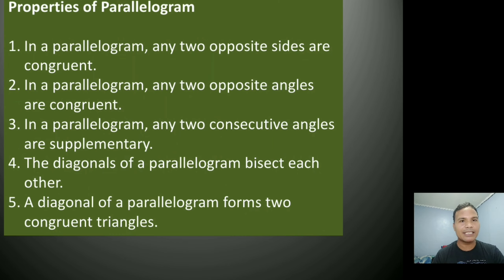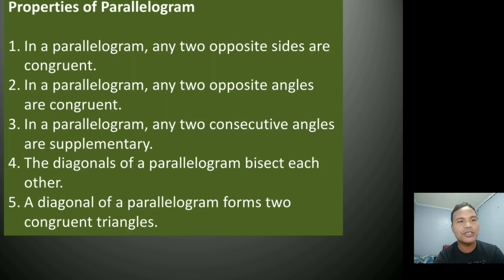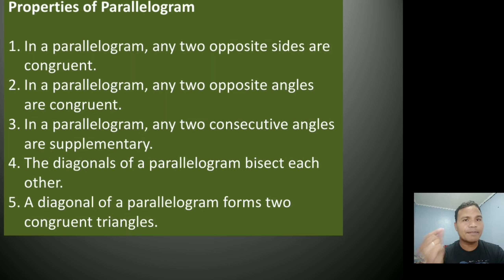Let us talk about the properties of a parallelogram. First, any two opposite sides are congruent. Second, any two opposite angles are congruent. Third, any two consecutive angles are supplementary. Fourth, the diagonals of a parallelogram bisect each other. Fifth, a diagonal of a parallelogram forms two congruent triangles. Take note of these properties because they will be used in solving problems involving parallelograms.